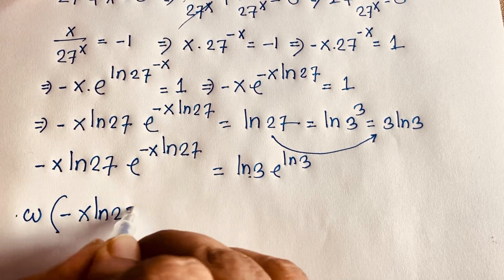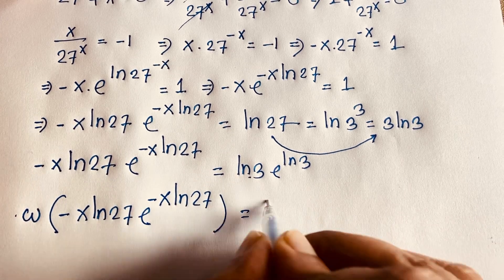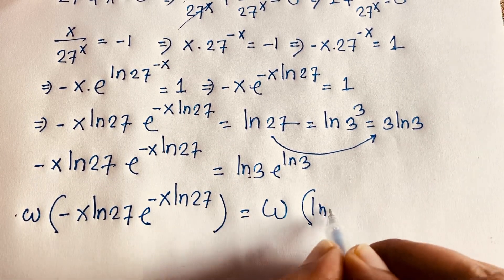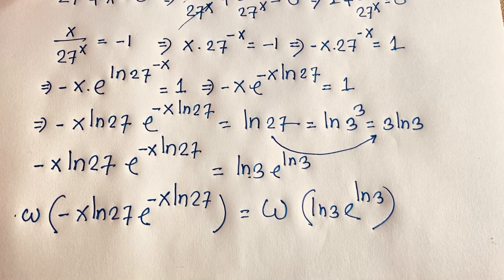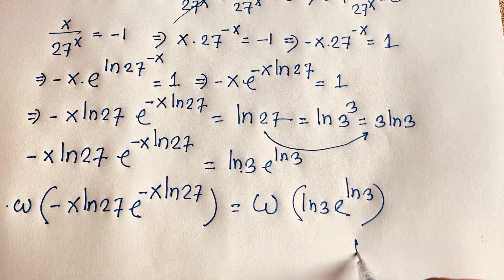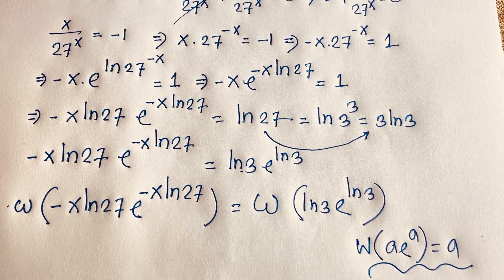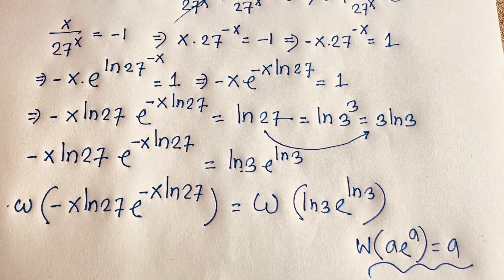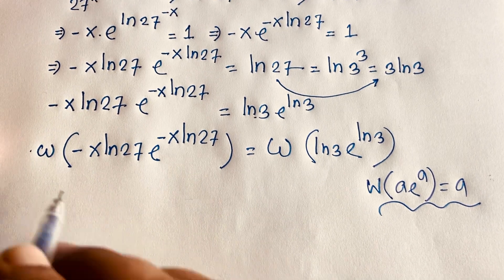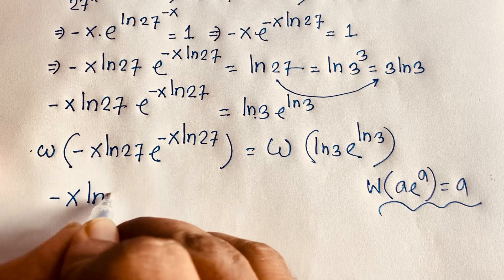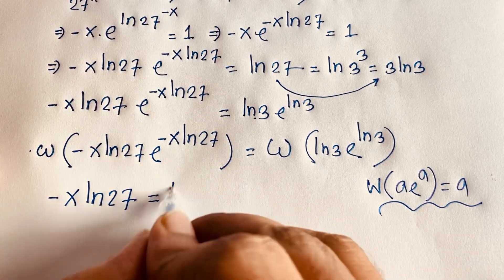Applying the Lambert W function to both sides: W(minus x · ln 27 · e^(minus x · ln 27)) equals W(ln 3 · e^(ln 3)). By the definition of the Lambert W function — W(a · e^a) equals a — this gives us: minus x · ln 27 equals ln 3.